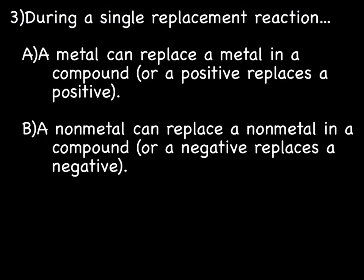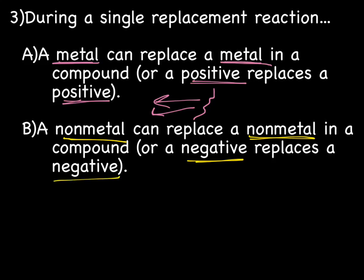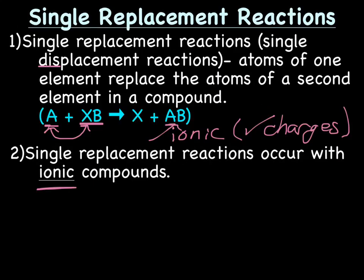During a single replacement reaction, a metal can replace a metal, or another way to think of it is the positive replaces a positive. Remember the jagged line on the periodic table? Or a non-metal replaces a non-metal, a negative replaces a negative. If this A turns out to be a metal, it'll replace the X. If the A turns out to be a non-metal, it'll be replacing the B.